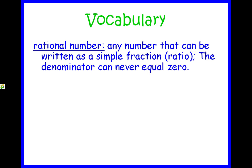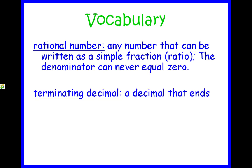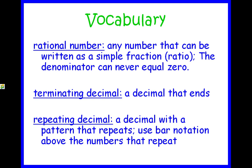Any number that is not irrational is rational. A terminating decimal is a decimal that is going to end. It comes to an abrupt stop. A repeating decimal is a decimal with a pattern that's going to repeat over and over again. Use bar notation above the numbers that are repeating.